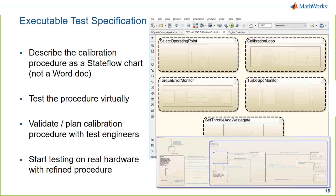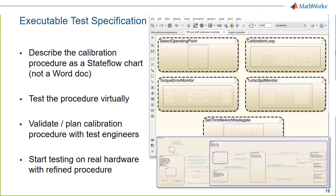This is done with Stateflow. The idea is that as you're designing engines, you have to design the calibration activity. Often groups define that through a Word document. Instead, we make an executable test specification — we write the logic and heuristics inside a Stateflow diagram so we can test it virtually. You might realize a test takes 18 hours when you only have 8 hours on the bench. Testing virtually means you arrive at hardware testing with a refined procedure and initial calibration values.